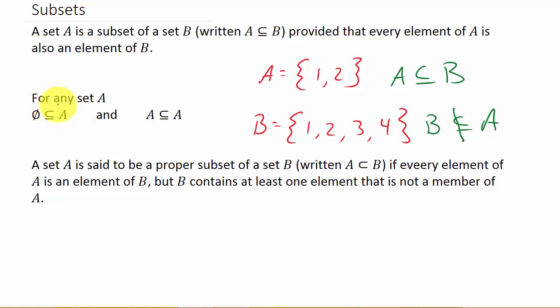And then we have here, for any set A, the empty set is a subset of A, and the set A itself is a subset of A. So here we could actually say that A is a subset of A, and we could say here B is a subset of B, because every element of A is also in A. And then of course, the empty set is a subset of both of these.